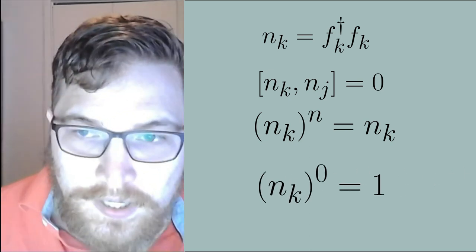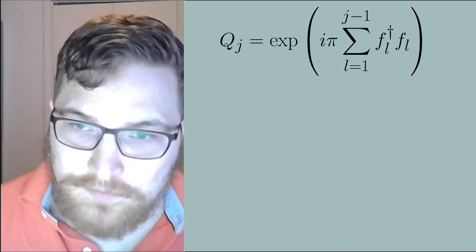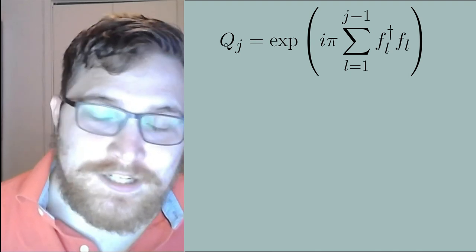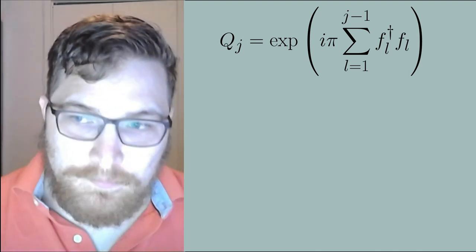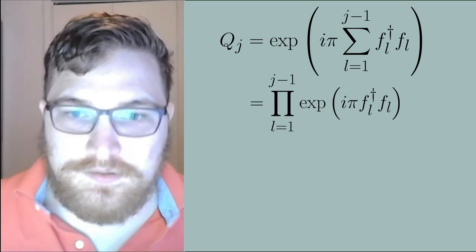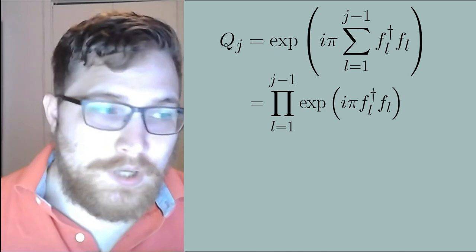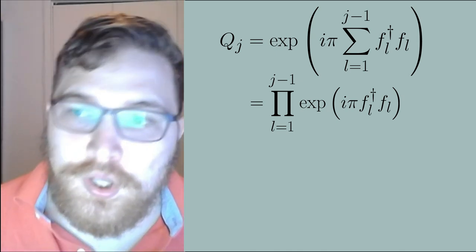With this in mind we can simplify the exponential expression in the transformation. Since all the number operators commute we can separate the exponential function or the sum into a product of exponential functions. So now that we have the exponential functions all on their own and there's no sum in the exponential we can now take a Taylor series expansion of one of the terms in the big product.